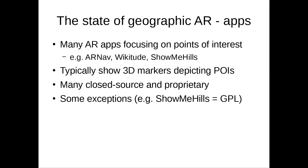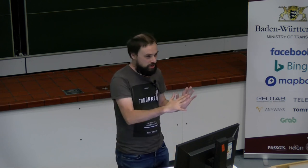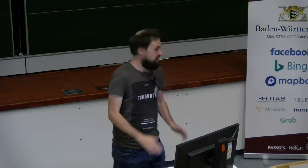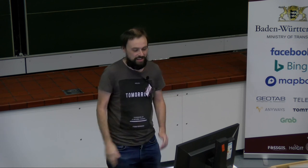Geographic AR has been around for a few years — around 2010, 2011 — when smartphones first really took off. There were quite a lot of early geographic AR apps. Wikitude, still going and based in Salzburg, produced essentially a point of interest browser where you could view a city through your phone's camera and see augmented reality markers giving information about points of interest, like a church in Heidelberg city centre.